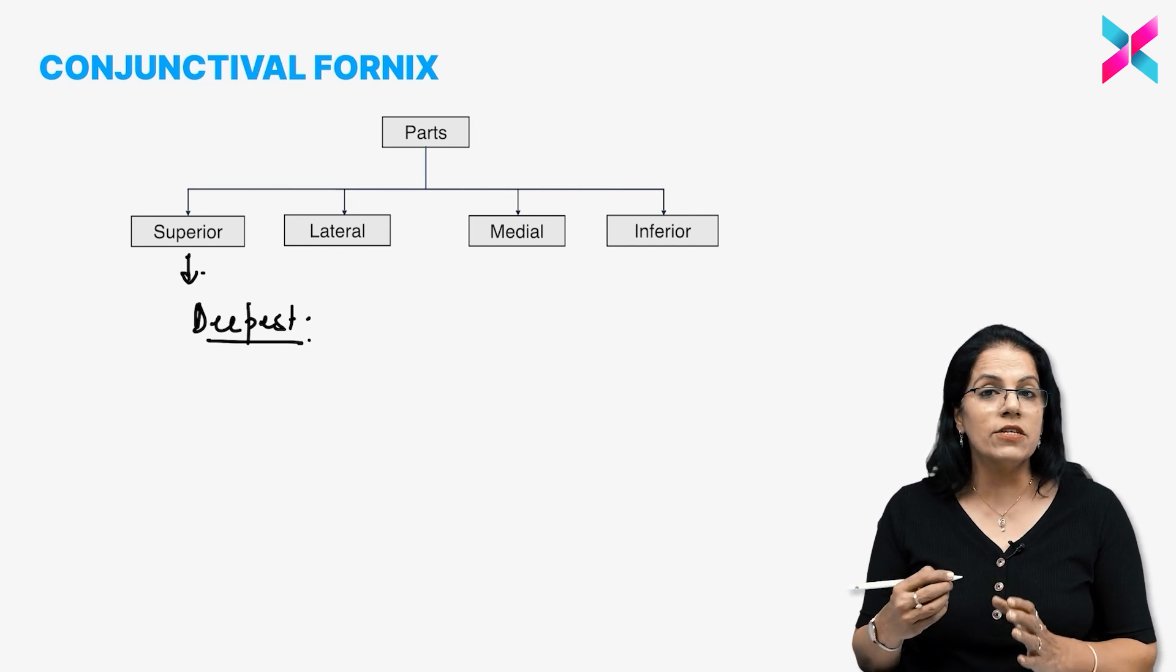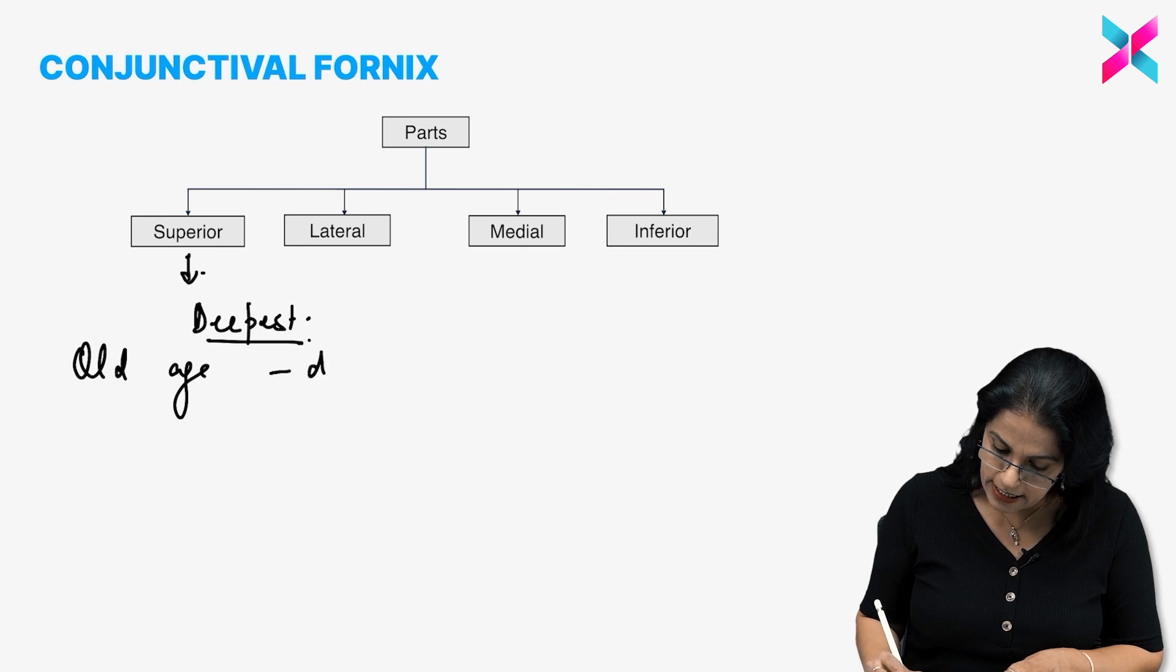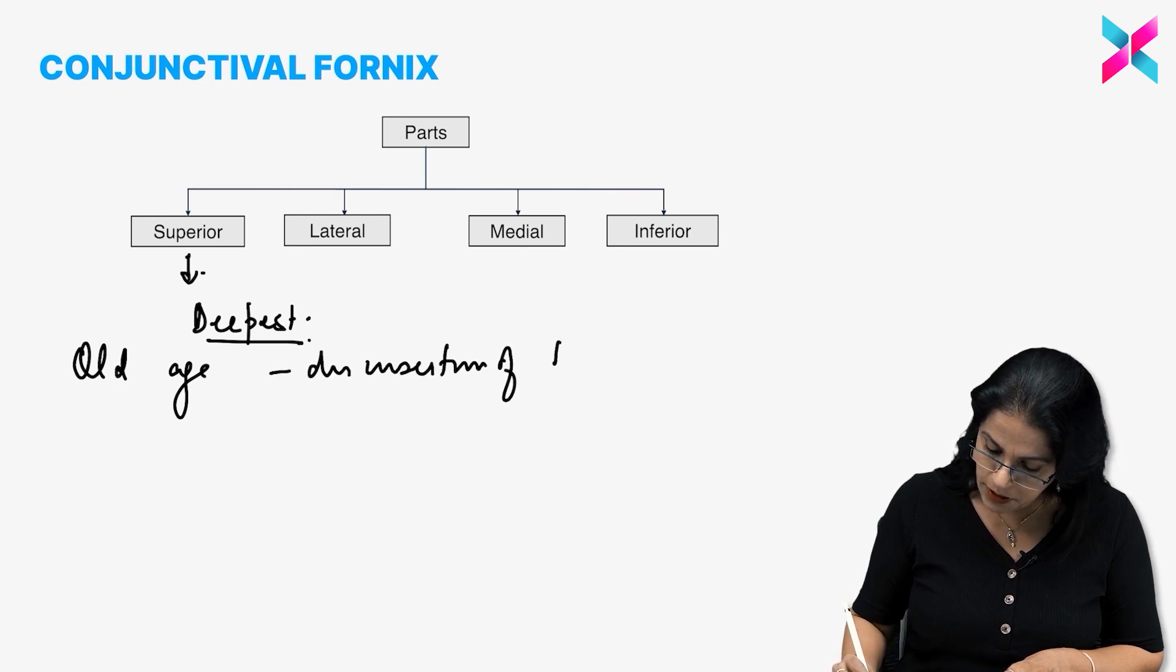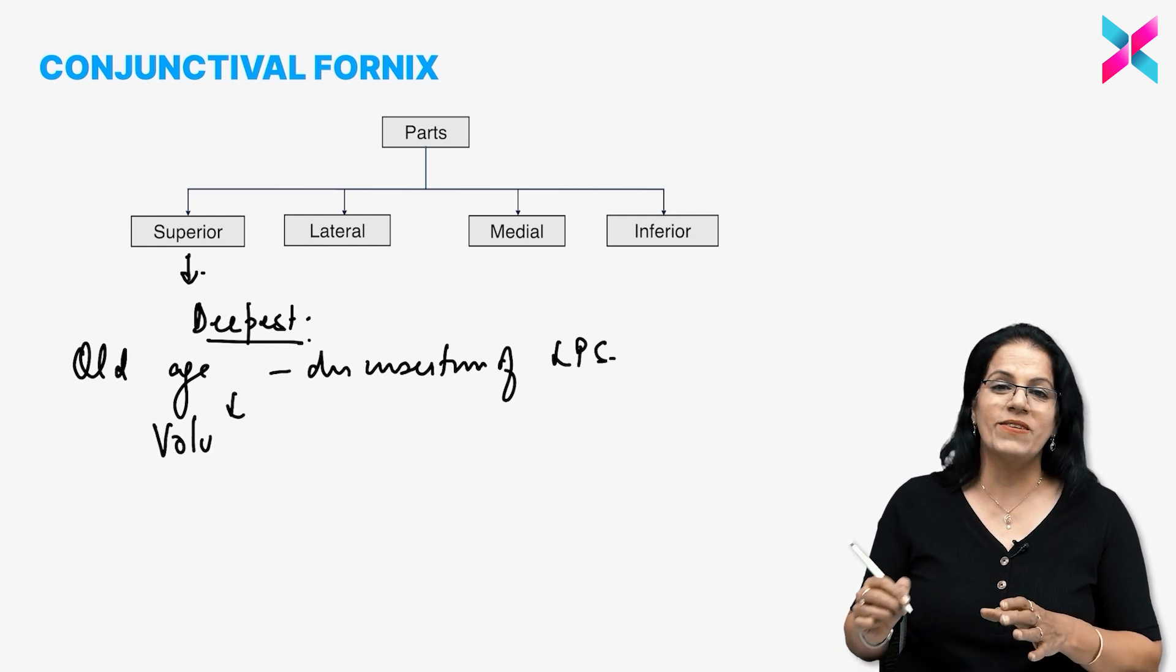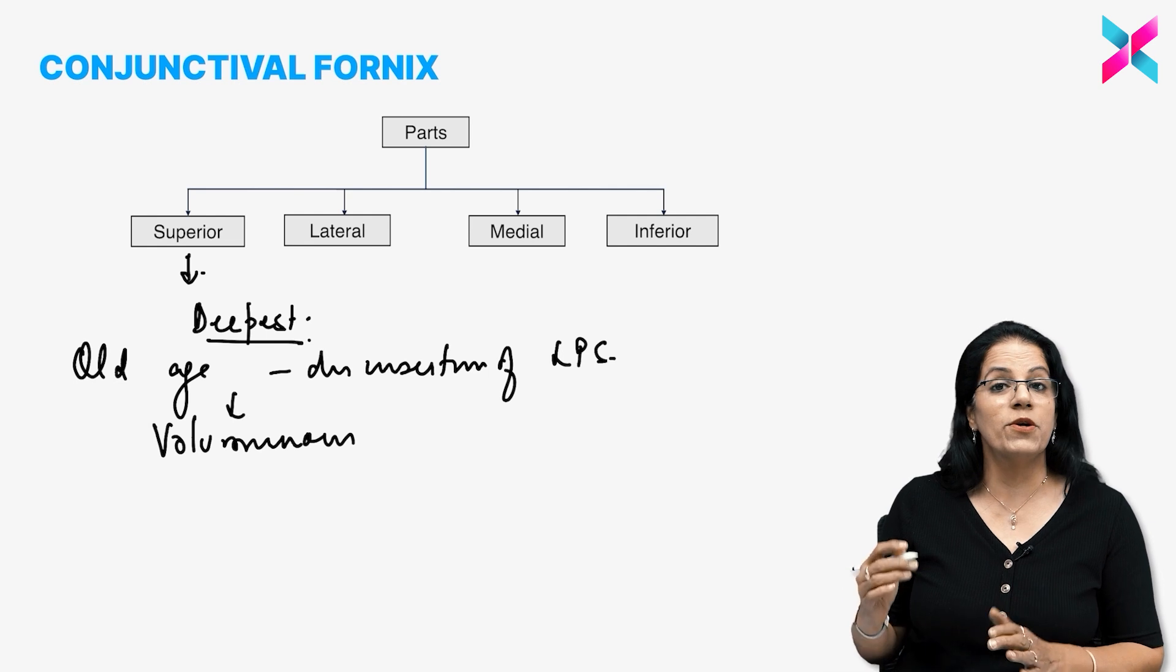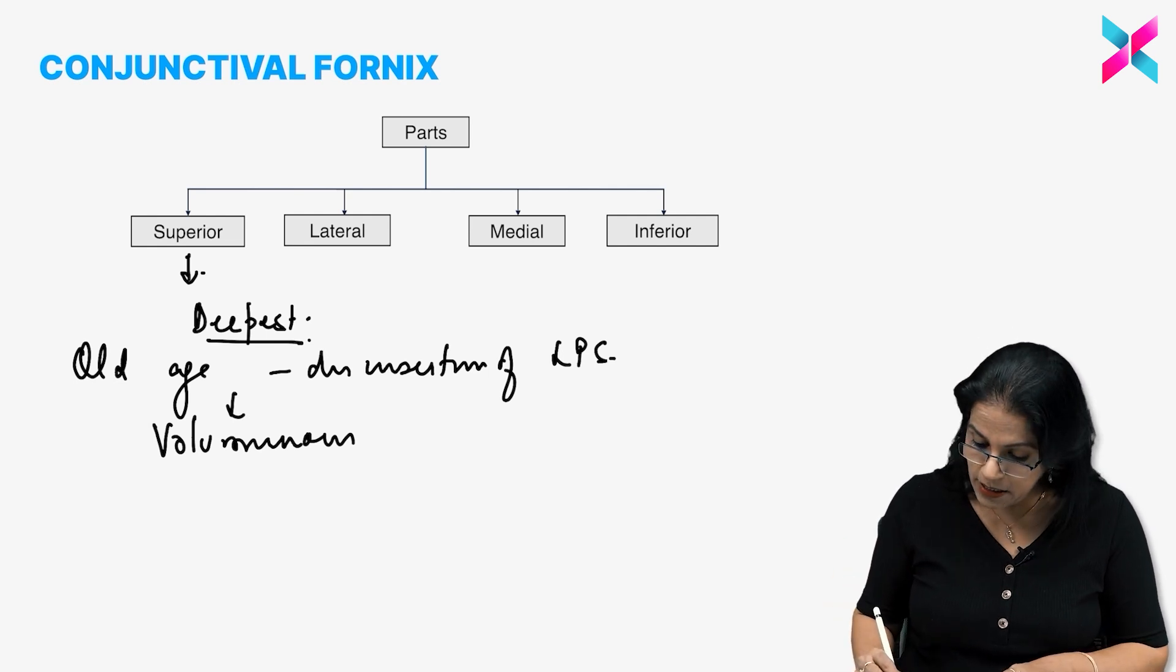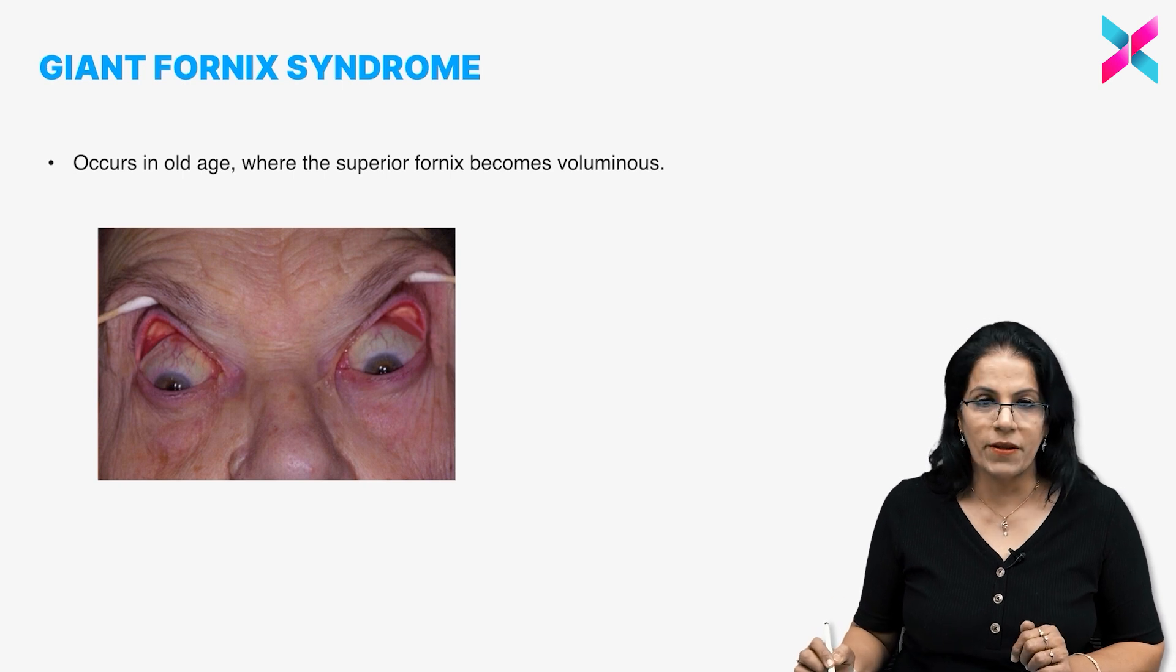Sometimes what happens due to disinsertion of the levator palpebrae superioris in old age, when there is disinsertion of LPS, what happens you get a very voluminous fornix. Superior fornix becomes very voluminous and this is what is called giant fornix syndrome.